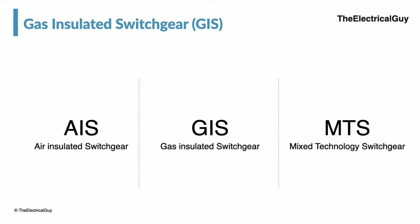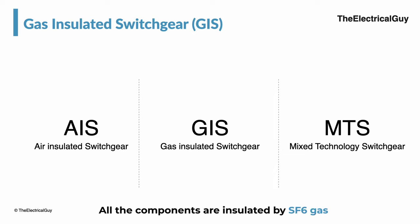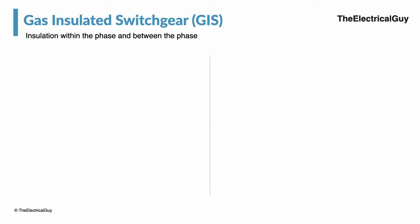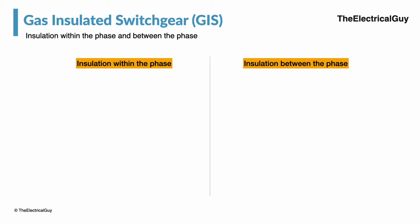As the name suggests, in GIS technology all the components are insulated by SF6 gas or any other gas. Insulation within the phase is provided by SF6 gas, and insulation between the phases is also provided by SF6 gas. We need to understand two important things: insulation within the phase and insulation between the phases.